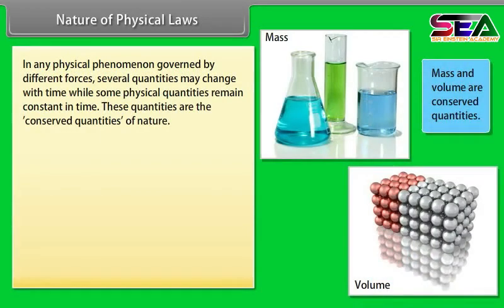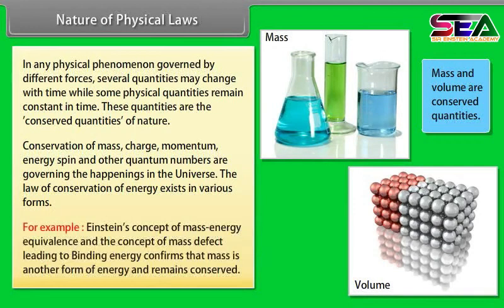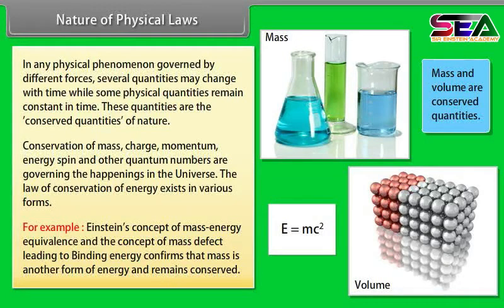Nature of physical laws. In any physical phenomenon governed by different forces, several quantities may change with time while some physical quantities remain constant in time. These quantities are the conserved quantities of nature. Conservation of mass, charge, momentum, energy, spin, and other quantum numbers are governing the happenings in the universe. The law of conservation of energy exists in various forms. For example, Einstein's concept of mass-energy equivalence and the concept of mass defect leading to binding energy confirms that mass is another form of energy and remains conserved.